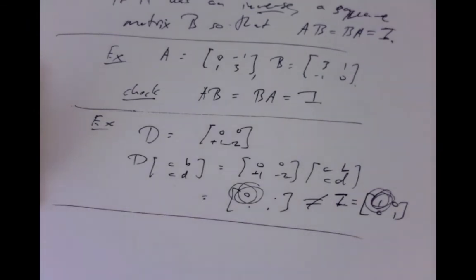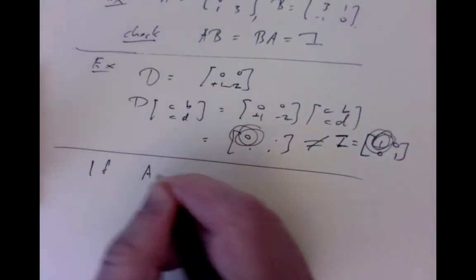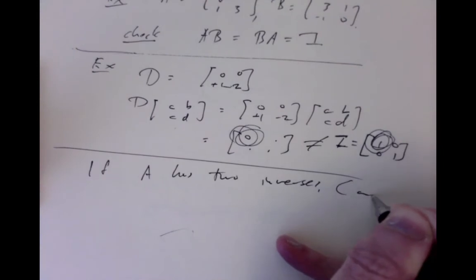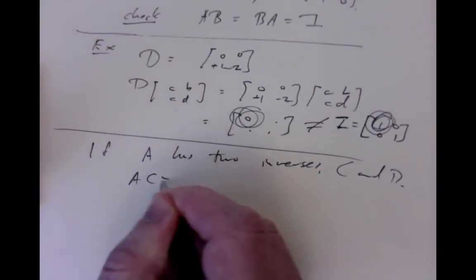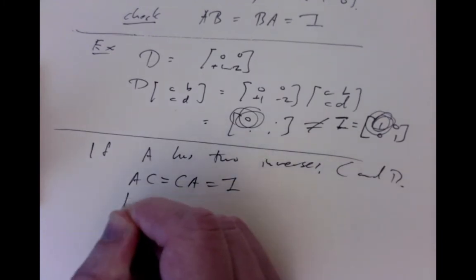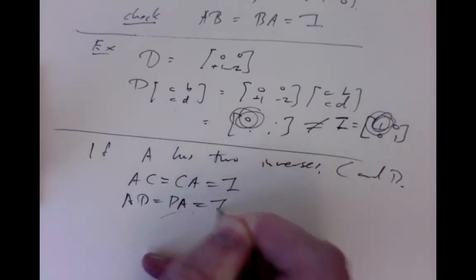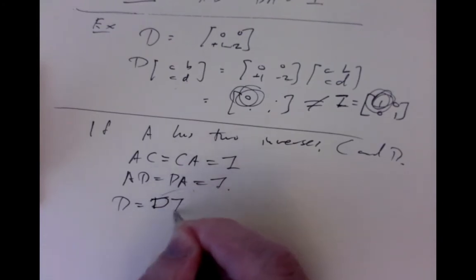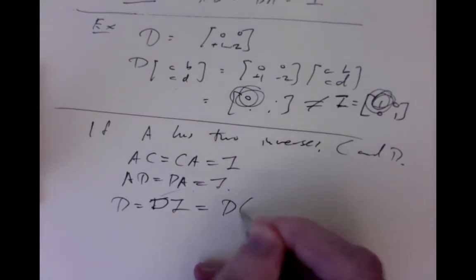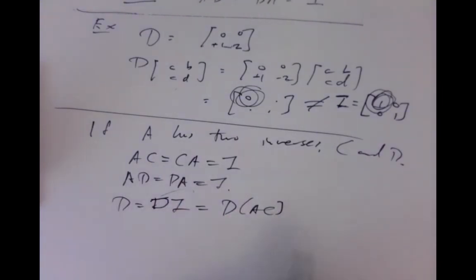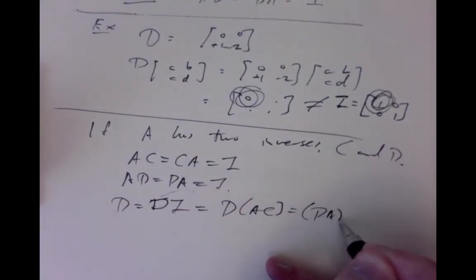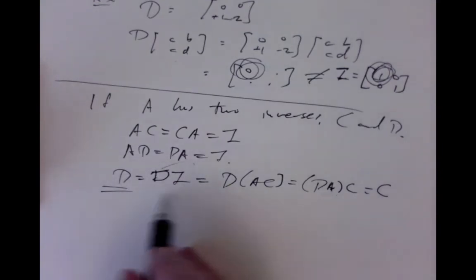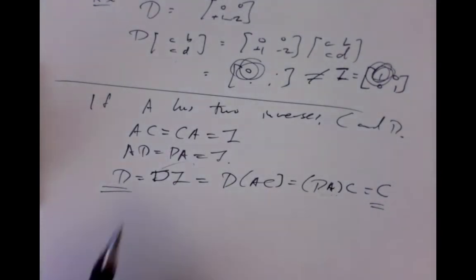It's easy to see that the inverse, if it exists, is unique. If A has two inverses C and D, then A times C equals C times A equals the identity, and A times D equals D times A equals the identity. Then D equals D times the identity, which equals D times (A times C), which equals (D times A) times C, which equals the identity times C, which equals C. So D equals C — there is only one inverse if it exists.